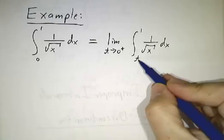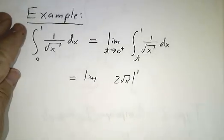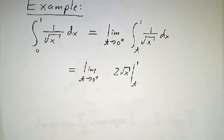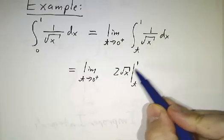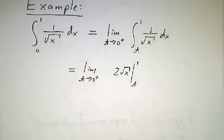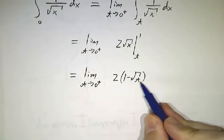But computing the integral from t to 1 is easy. We know what an antiderivative of 1 over root of x is. It's just twice root of x. So we just have to take twice root of x, plug it in at 1 and at t.